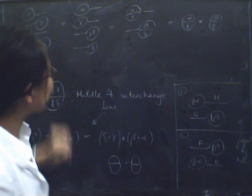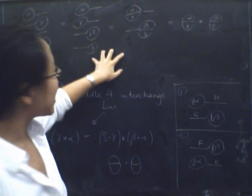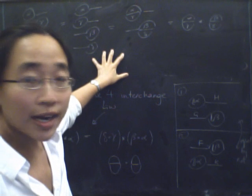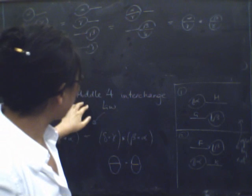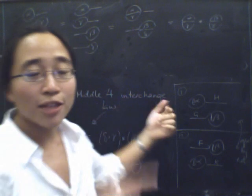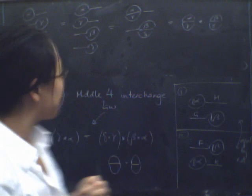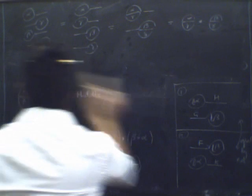And what I really needed to say was something about this supposed proof I had of showing that the middle floor interchange law holds using the process of having these fishes swimming in the opposite directions. So if we just look for a second at what I did.